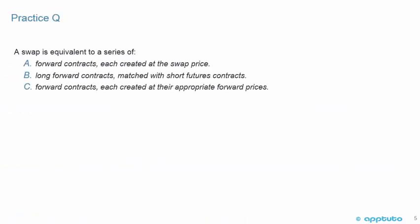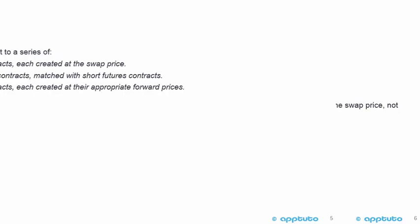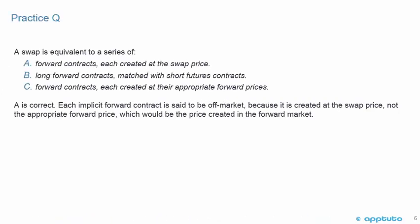We'll finish this LOS with two quick practice questions. The first: a swap is equivalent to a series of — A — forward contracts each created at the swap price. The correct answer is A. A swap is equivalent to a series of forward contracts each created at the swap price. Each implicit forward contract is said to be off-market because it is created at the swap price, not the appropriate forward price, which would be the price created in the forward market. That's an important fact to know.